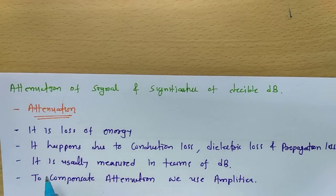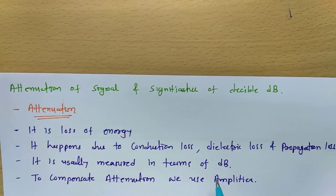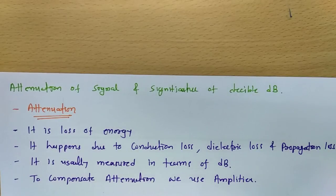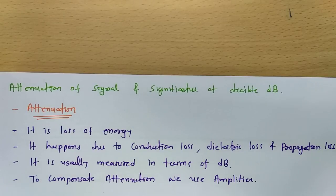How do we measure attenuation? We usually measure attenuation in terms of dB, and there are reasons for that which we will discuss later in this session. To compensate for attenuation, we use amplifiers in our circuits. Let us understand how attenuation of signal happens and why we measure it in terms of dB.